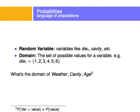I'll start by defining a random variable. Random variables are variables like a die or two dice, a cavity — like do I have a cavity or do I not have a cavity — or the probability of being in a car accident. Car accident would be a random variable, and so on and so forth.